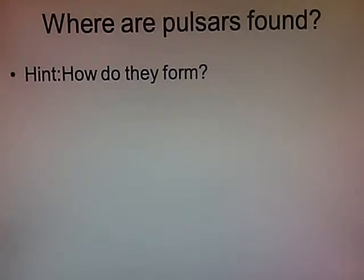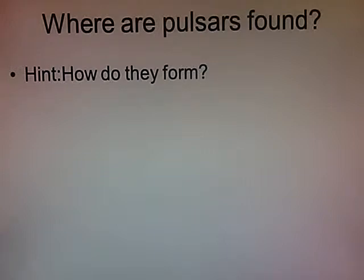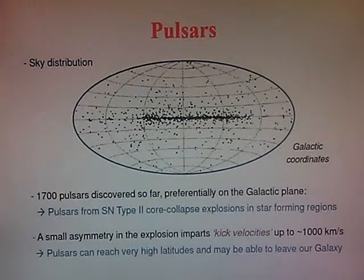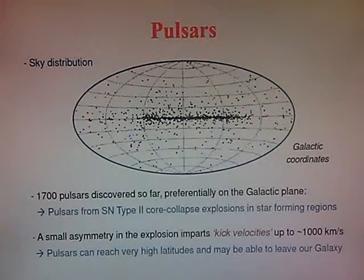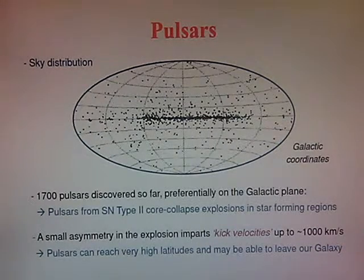Where would we actually find pulsars? In spiral arms - that's where you have the most material and where massive stars form, and we need massive stars to go supernova. So wherever you have the most star formation is where you expect to find most pulsars. Indeed, if we take a survey, most of them are found in the galactic plane, which is where we have most of the gas and dust. There's a small asymmetry in the explosion that can impart something like 1,000 kilometers per second velocities to these pulsars, so they can quickly move away from the centers of their remnants.